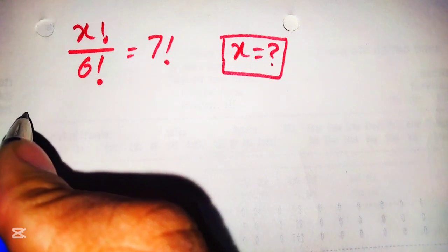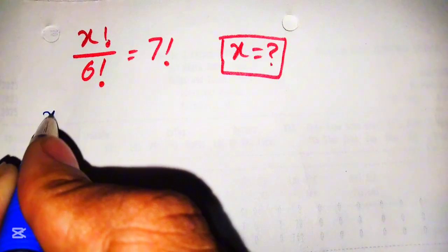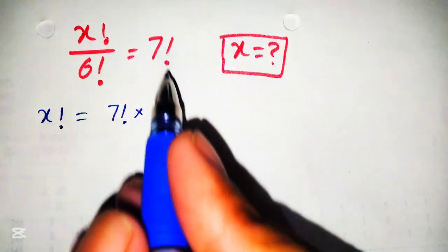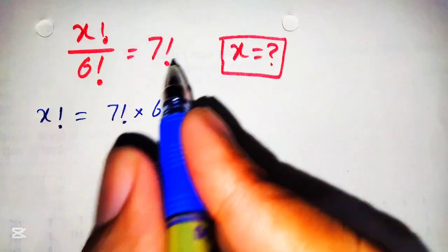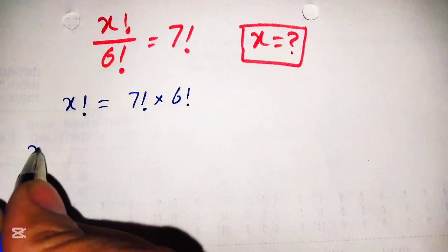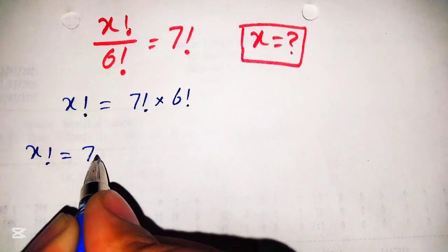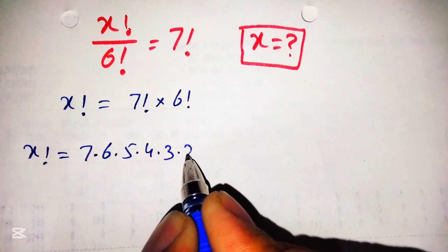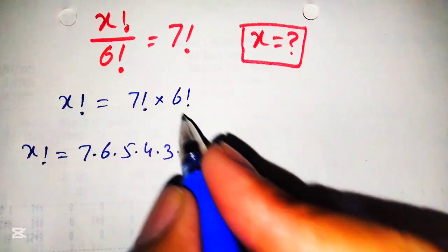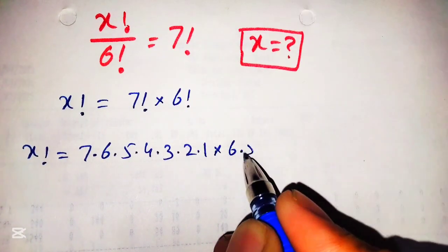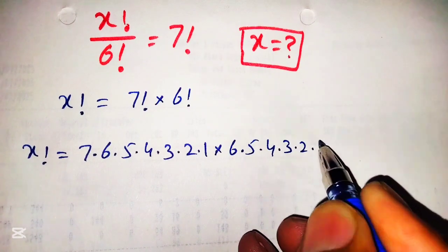This is a very interesting question. To solve this, first we will rewrite the given equation as x factorial is equal to 7 factorial multiplied by 6 factorial, taking 6 factorial to the right-hand side. Now opening this factorial term, we get x factorial is equal to 7 into 6 into 5 into 4 into 3 into 2 into 1, and this 6 factorial can be written as 6 into 5 into 4 into 3 into 2 into 1.